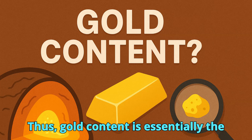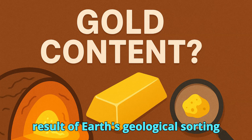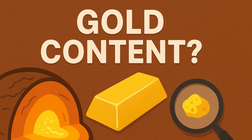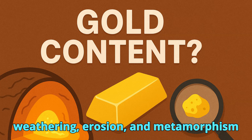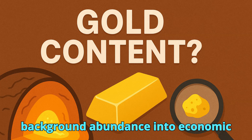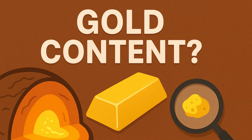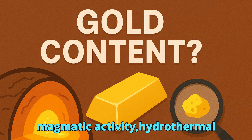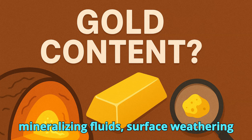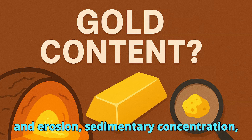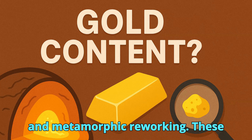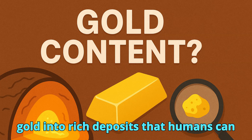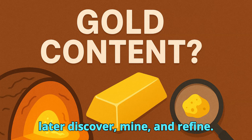Thus, gold content is essentially the result of Earth's geological sorting system, where natural processes like magmatism, hydrothermal activity, weathering, erosion, and metamorphism concentrate gold from a very low background abundance into economic deposits. In summary, gold content is formed through deep earth magmatic activity, hydrothermal mineralizing fluids, surface weathering and erosion, sedimentary concentration, and metamorphic reworking. These processes transform scattered atoms of gold into rich deposits that humans can later discover, mine, and refine.